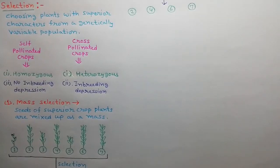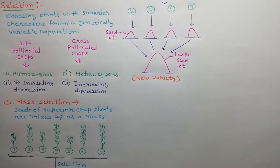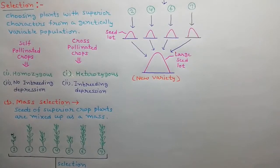Hence, we select plant number 2, 4, 6, and 7 for further activities. Now collect the seeds from selected plants separately. Now mix up their seeds as a mass. This mass of seeds represents a new variety.